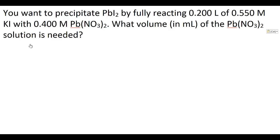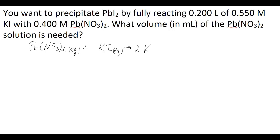The reaction that happens here would look like this: lead nitrate in aqueous form reacts with potassium iodide, also in solution form — and there should be two potassium iodides — to give two potassium nitrates plus lead iodide solid. So there is a precipitate that forms for this particular reaction.